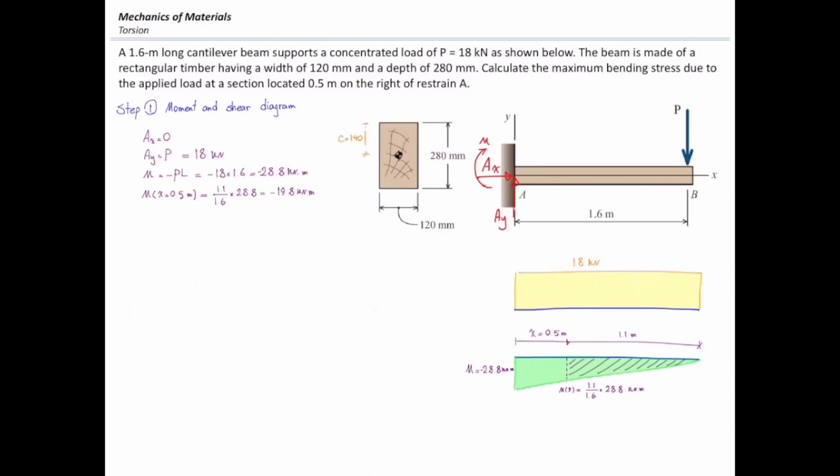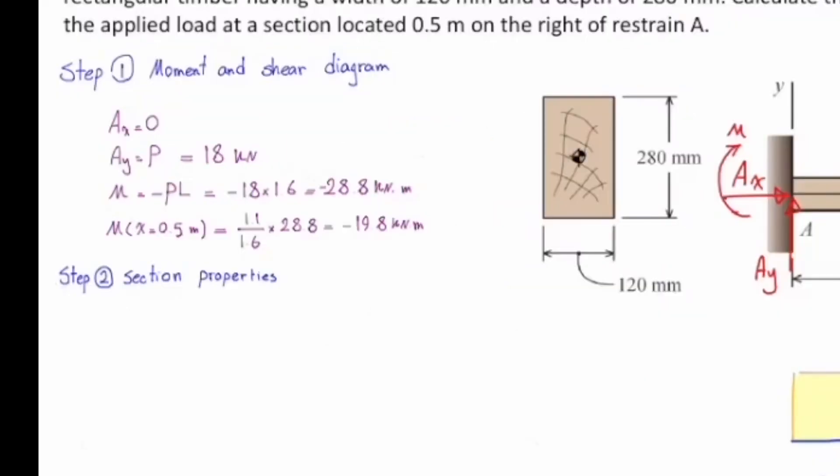In the second step, we determine section properties, which includes location of centroid and moment of inertia. In this case, location of centroid is very simple because the section is a simple rectangle, and the location would be simply at the middle of that. And the moment of inertia would be base times height cubed over 12. Base is 120 millimeters, and height is 280 millimeters, which gives me moment of inertia equal to 219.5 times 10 to the sixth millimeter to the fourth.